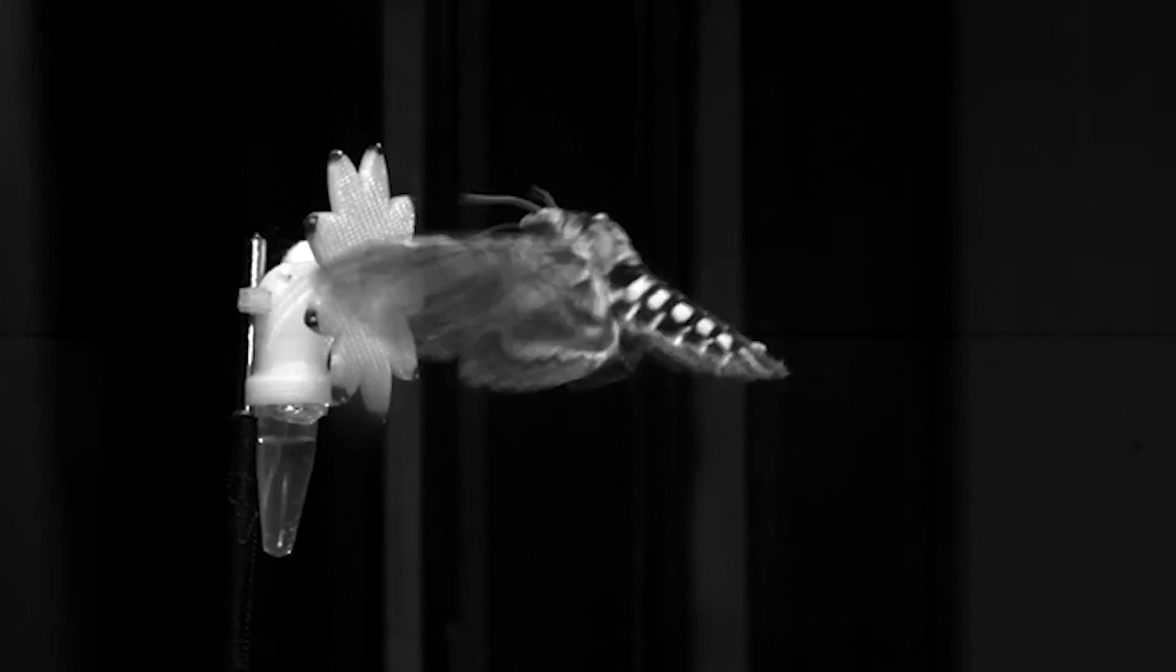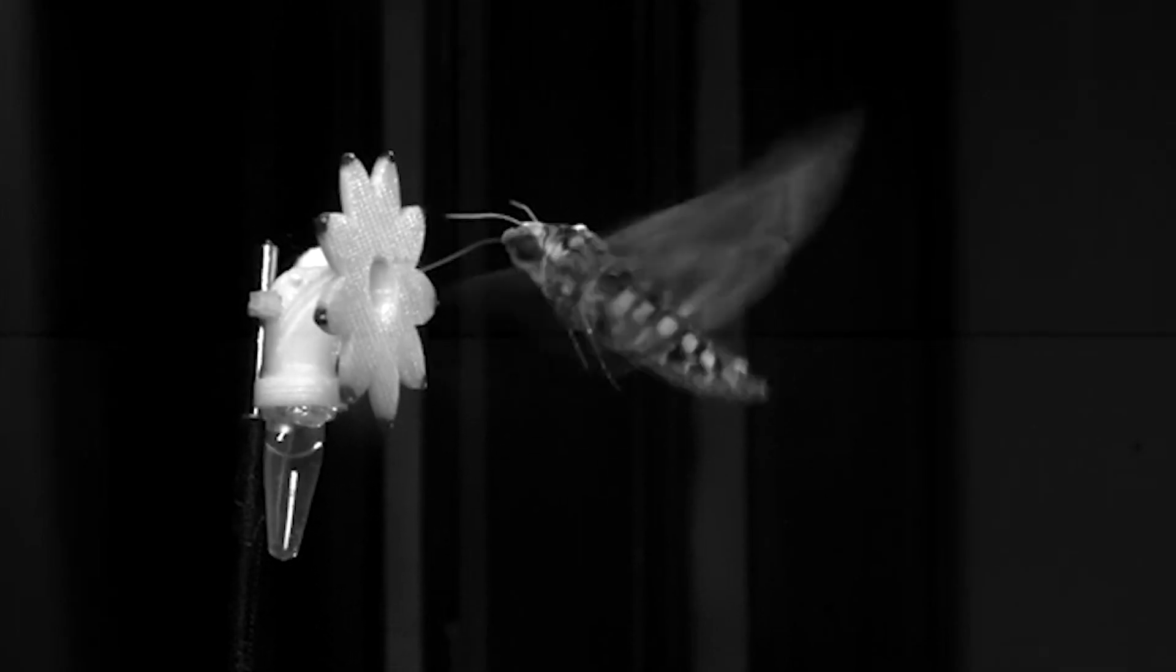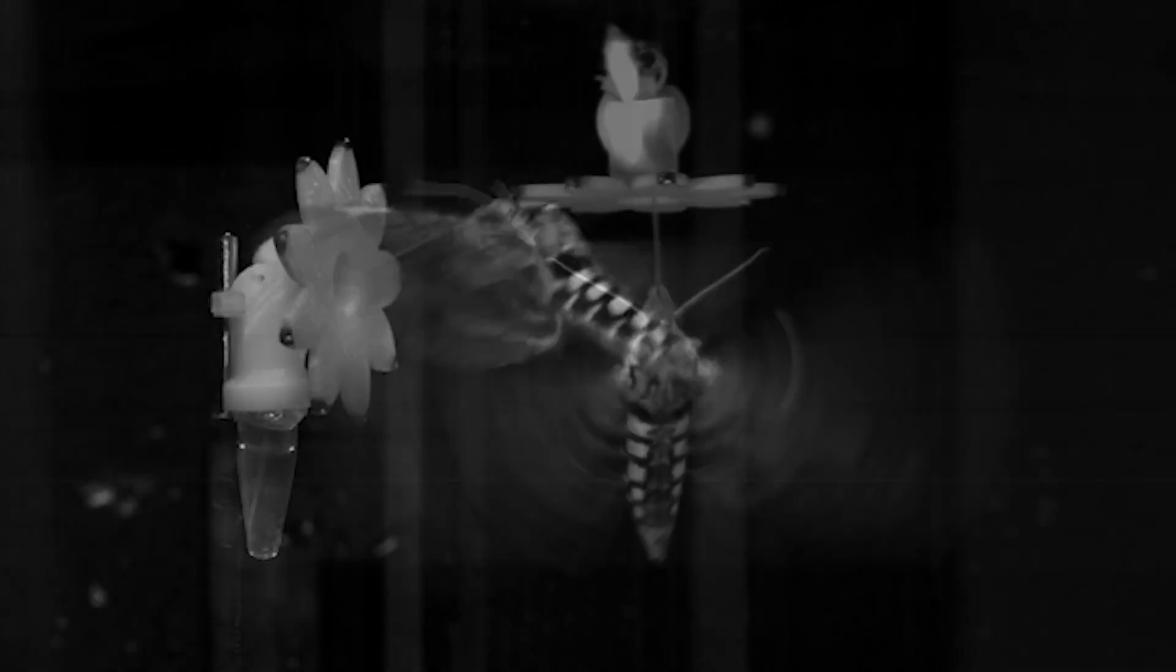They're called hawk moths because they're incredibly agile flyers. They have exhibited such a fine ability to navigate and maneuver in a challenging sensory environment. And actually in using a challenging kind of locomotion. Hovering in mid-air when you're this big is very difficult.